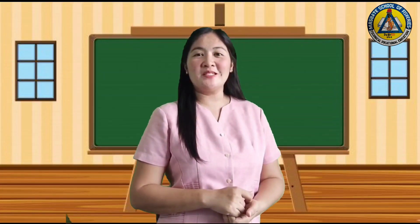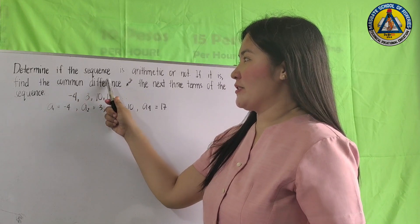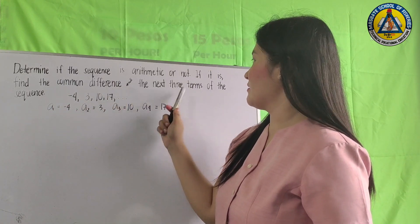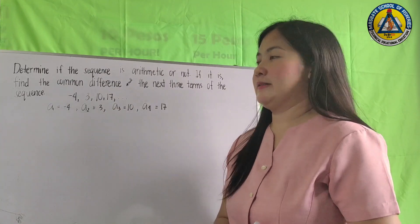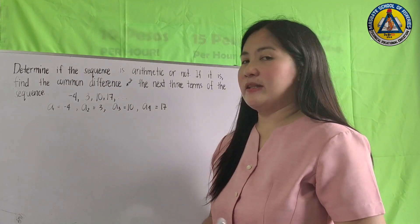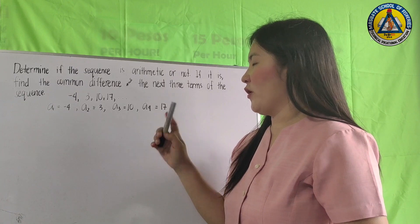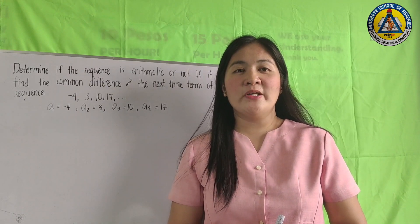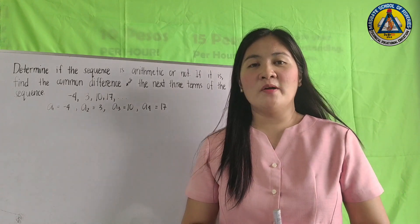From our discussion on arithmetic sequences, let us solve the following problems. First problem: determine if the sequence is arithmetic or not; if it is, find the common difference and the next three terms. The sequence is: negative 4, 3, 10, 17. So a(1) = -4, a(2) = 3, a(3) = 10, and a(4) = 17. There must be a common difference between any two consecutive terms. Let us find the common difference.